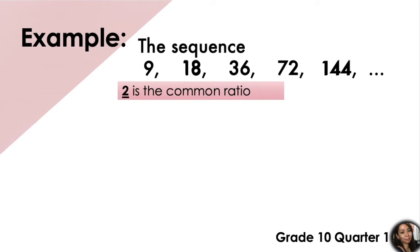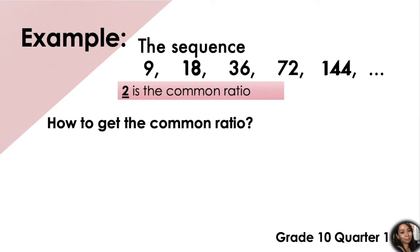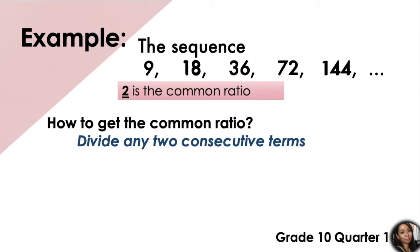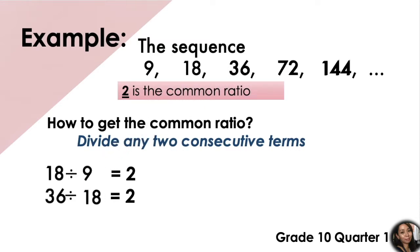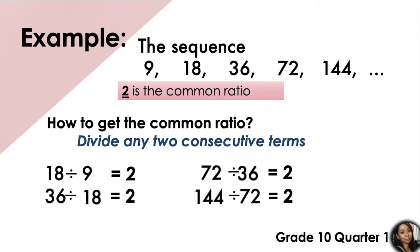Now, how do we get the common ratio? In a geometric sequence, we need to find two consecutive terms and divide them. 18 divided by 9 is 2. 36 divided by 18 is 2. 72 divided by 36 is 2. And 144 divided by 72 is 2. The common ratio is denoted by small letter r, and r is equal to 2.